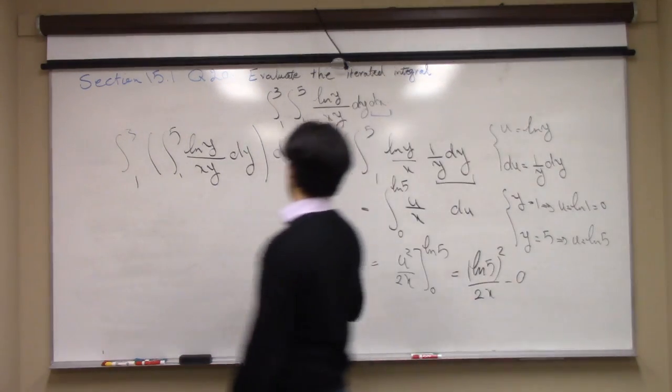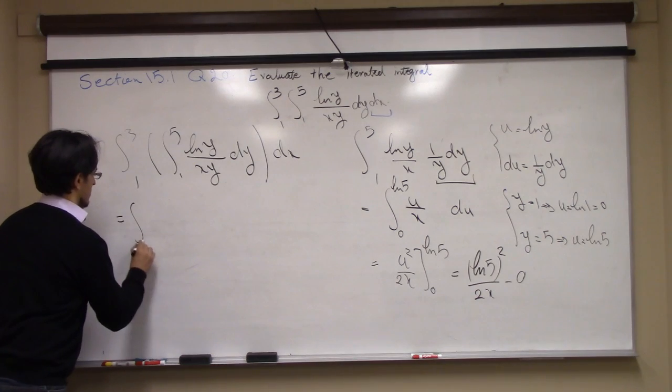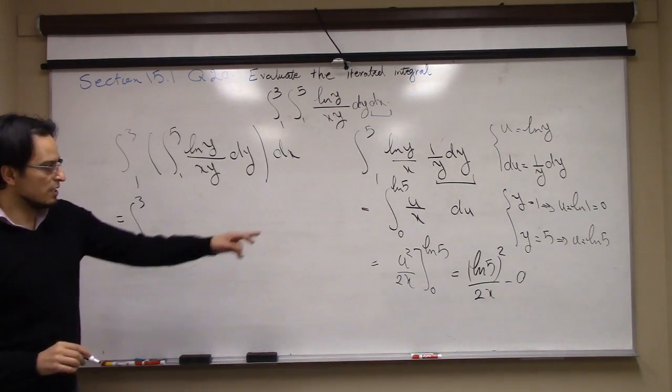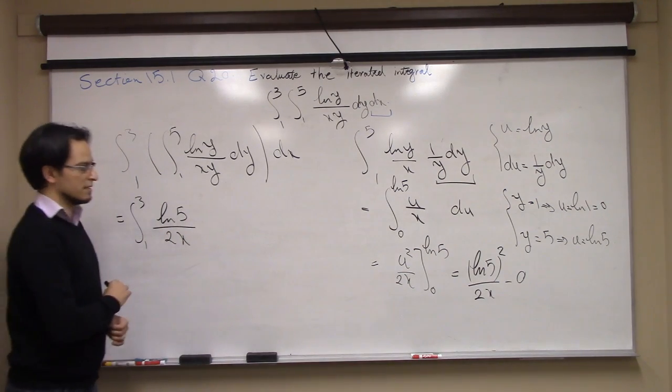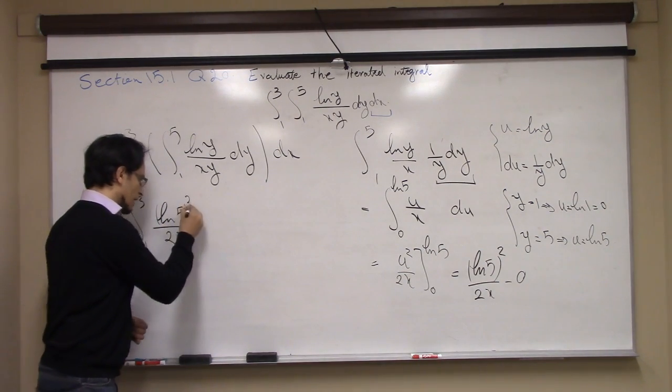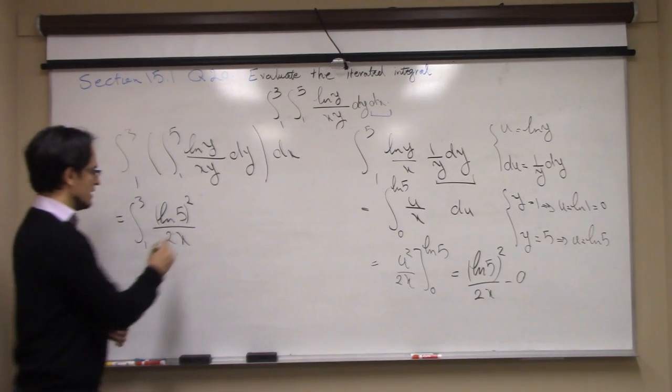So my inner integral becomes ln 5 squared over 2x dx.